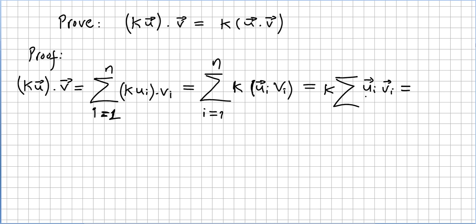So what is this? k times the sum of ui vi that's nothing else but k times ui vi, right? So k times u times v, this one equals k times ui vi and that concludes the proof.